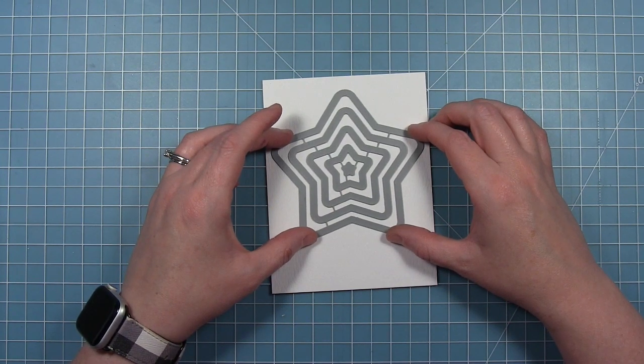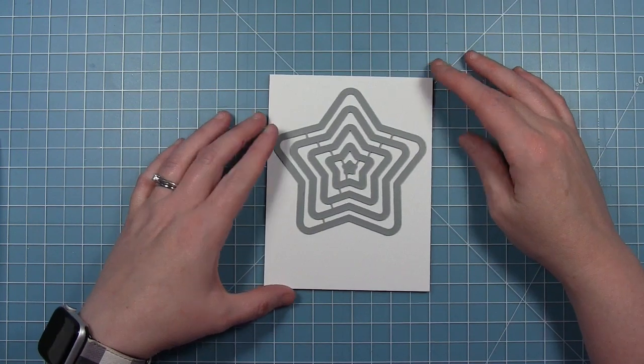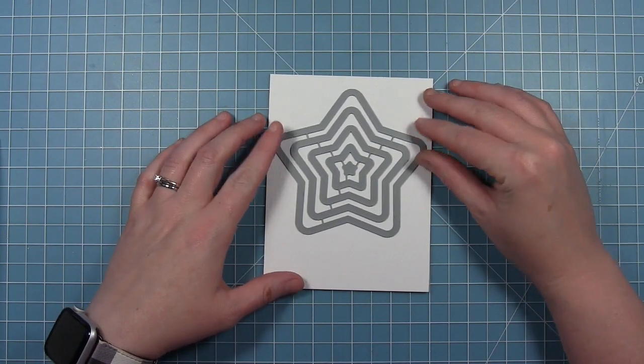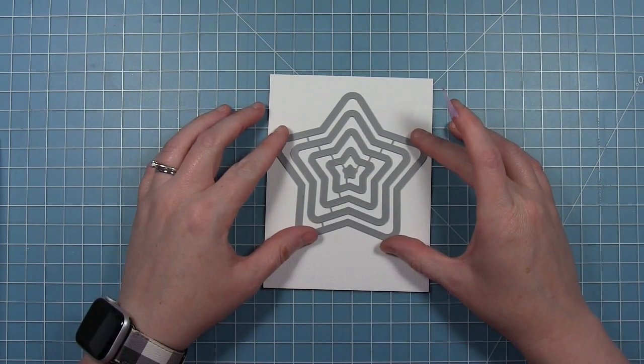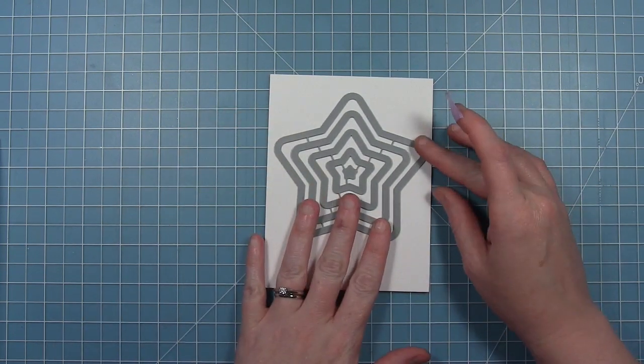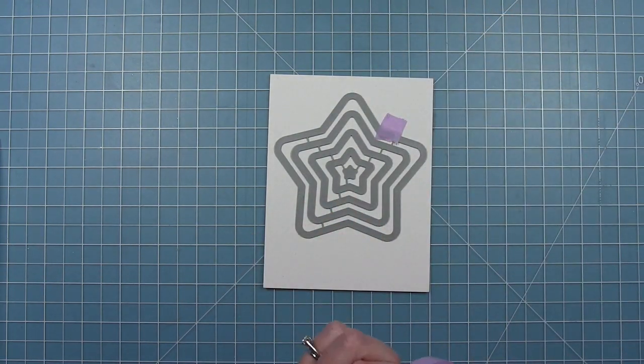For the first card, I want my stars to be concentric, so I'm actually going to use them before I cut them apart, but you could easily do the same technique by stacking your stars inside each other and holding them together with a long piece of tape across the back. I have a piece of watercolor paper here, and I'm just going to tape them in place.